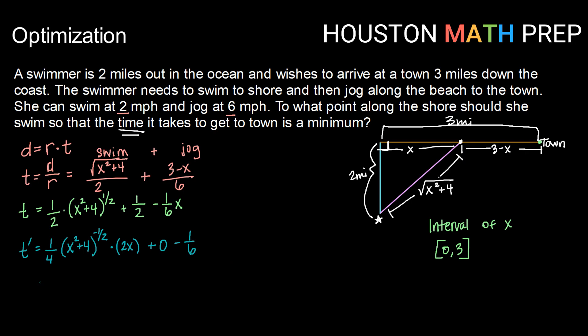So cleaning that up just a bit, one-fourth times two x makes x over two. So we have x over two. And then we can take this x squared plus four to the negative one-half and put that as a square root in our denominator. Then we still have our minus one over six.